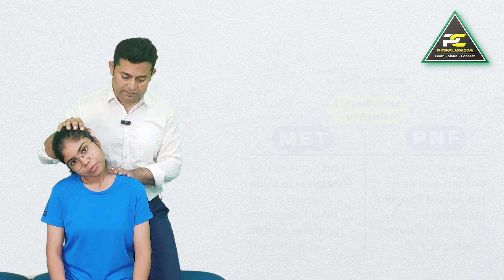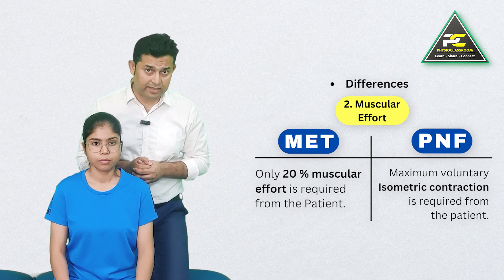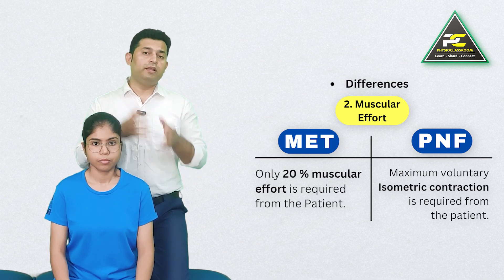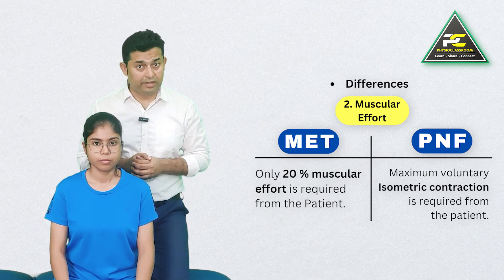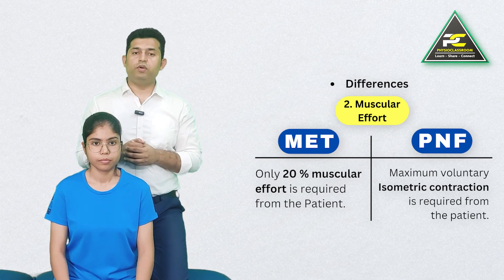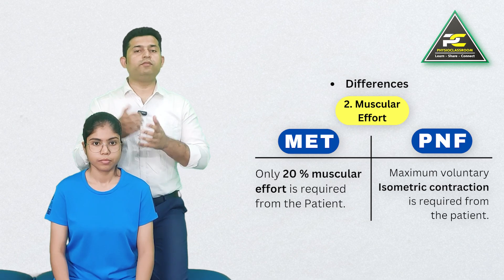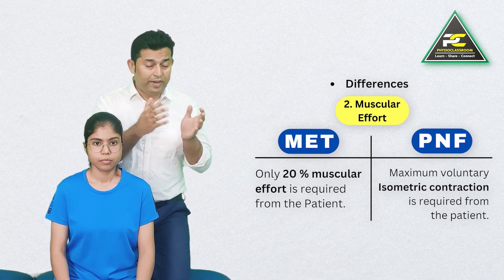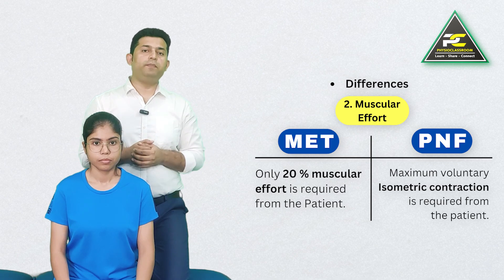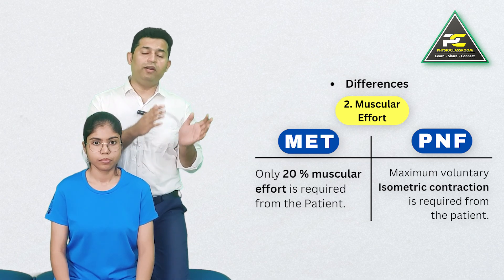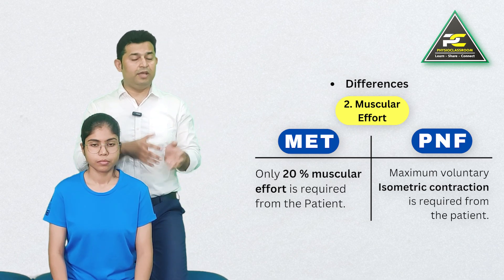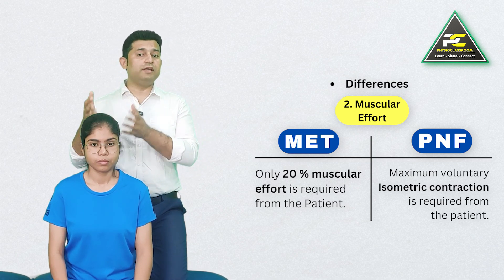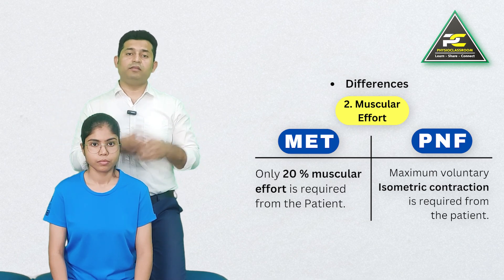The second important difference between MET and PNF is the muscular effort demanded from the patient. In MET, the therapist utilizes only 20% of the patient's maximum voluntary contraction, whereas in PNF hold-relax, the therapist builds up to the maximum available contraction from the patient.